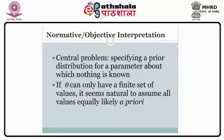What is the normative and objective interpretation? Specifying a prior distribution for a parameter about which nothing is known. When nothing is known about the parameter theta, what kind of prior distribution can we take? If theta can only have a finite set of values, it seems natural to assume all values equally likely a priori. When nothing is known, can we assign equal chance of occurrence for every value of theta in a finite interval range? Whether the ordinates are the same for all values of theta in that finite range may be of interest.